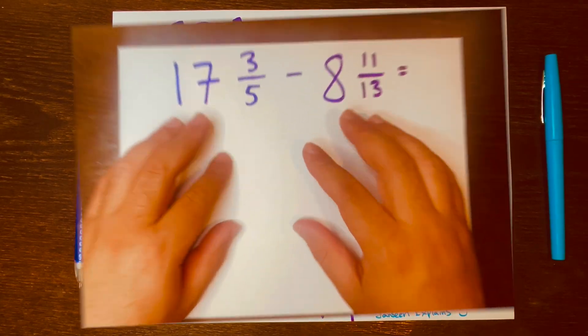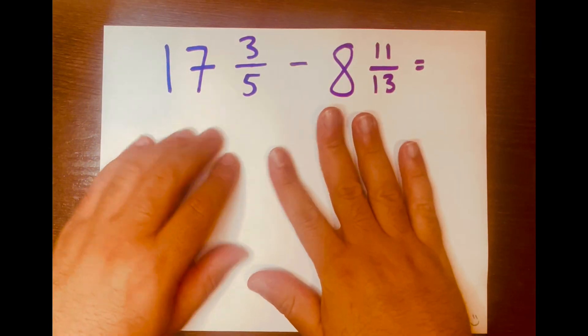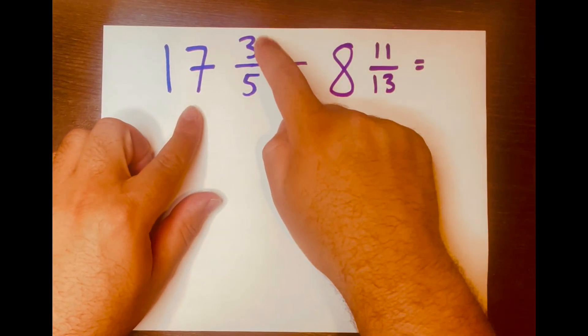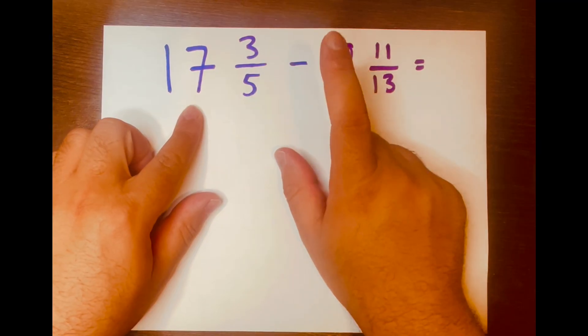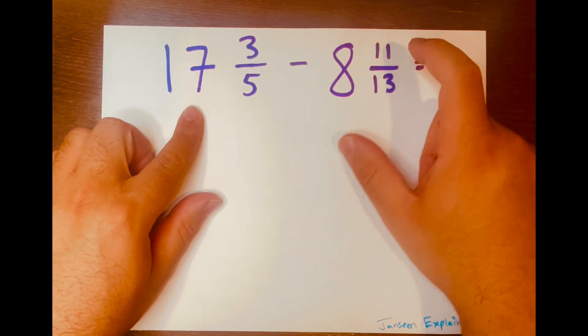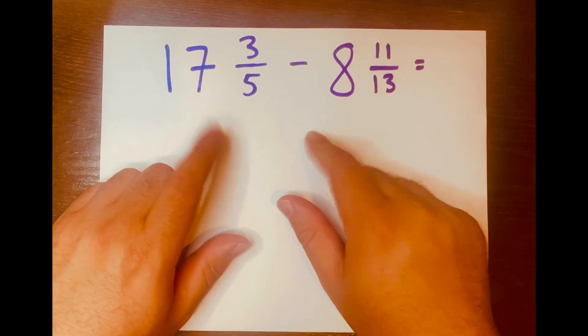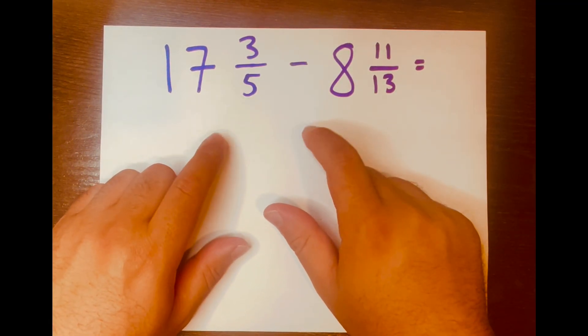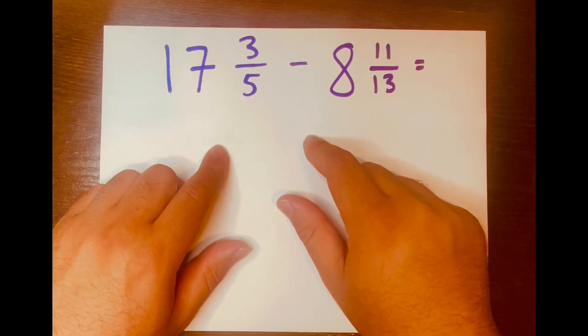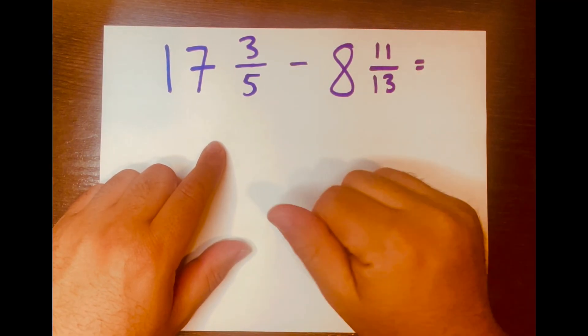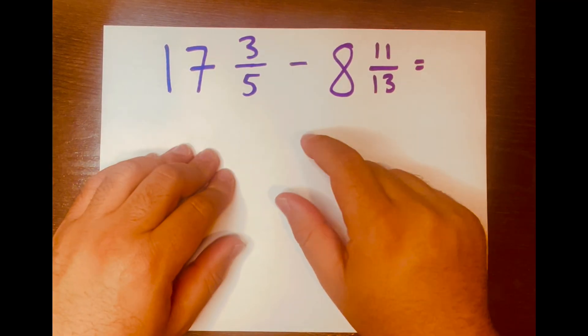Hey, math legends. Here is a challenging problem for you. 17 and 3/5 minus 8 and 11/13. Go ahead and solve this problem and then type your answer in the comment section down below. And this will be good practice. So thank you for watching, and I'll see you in the next video.